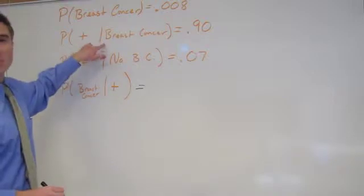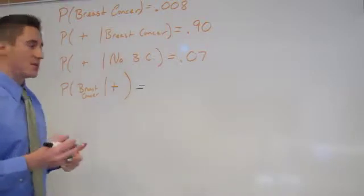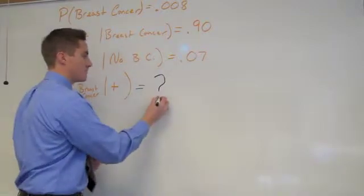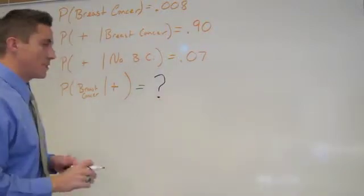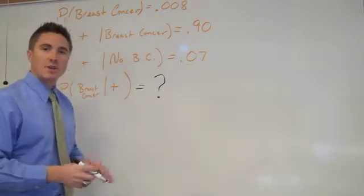Let's think about how we could solve this problem and start by making a tree diagram. When we start with the tree diagram, you want to start off with the thing that's the most basic. These two probabilities are conditional. They give us one probability that's not conditional.